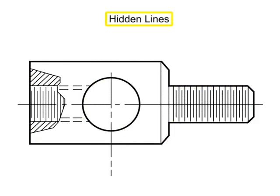Hidden lines consist of short dashes, evenly spaced. These lines are used to show the hidden features of a part. They begin with a dash in contact with the line from which they begin, except when such a dash would form a continuation of a full line.